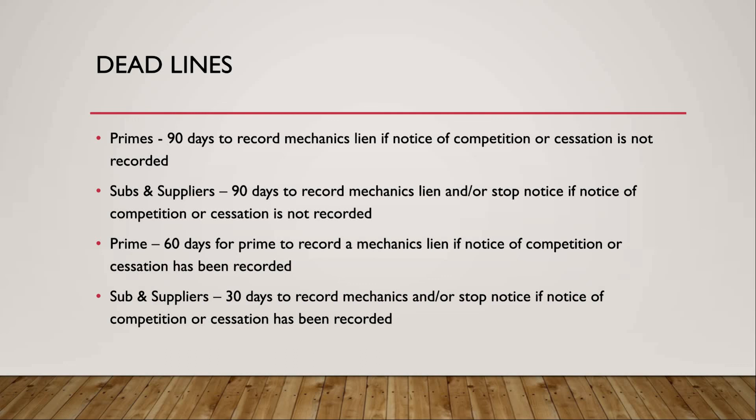For deadlines: prime contractors have 90 days to file a mechanics lien if a notice of completion or cessation has not been recorded. Subs or suppliers also have 90 days to record a mechanics lien or stop notice if no notice of completion or cessation has been recorded. Remember, subs can also be primes. If you're a sub under a prime, you'll use a 20-day preliminary notice but file a stop notice.